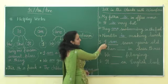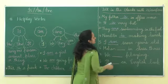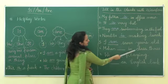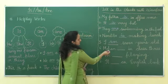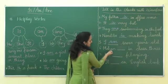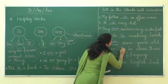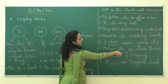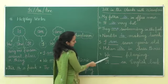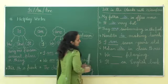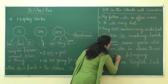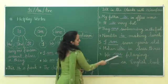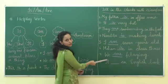Number five: 'I ___ seven years old.' We use 'am' because 'am' always comes with 'I'. I am seven years old. Number six: 'Mohan ___ in class three.' Mohan is the name of a boy, it is a singular noun, so Mohan is in class three. Number seven: 'We ___ playing.' We are playing because 'we' is a plural pronoun.